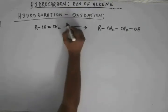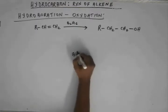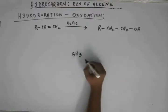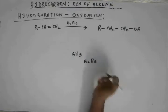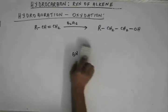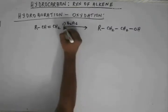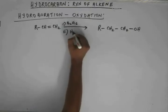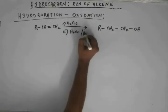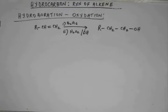The reagent here is Diborane. Borane is BH₃, and borane exists in the form of a dimer, B₂H₆ — Diborane. To write the reagent we write B₂H₆, Diborane. We take Diborane in the first step, and then we take hydrogen peroxide in alkaline medium — a base and hydrogen peroxide.